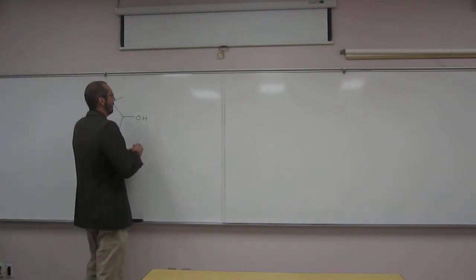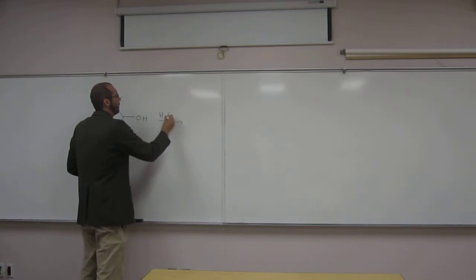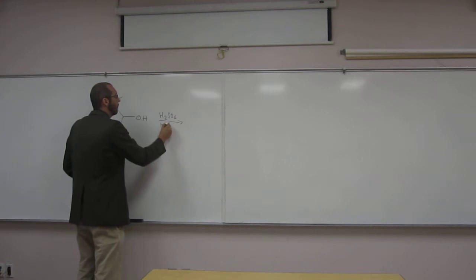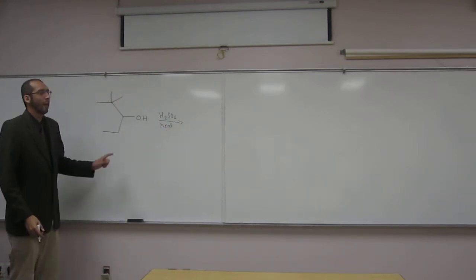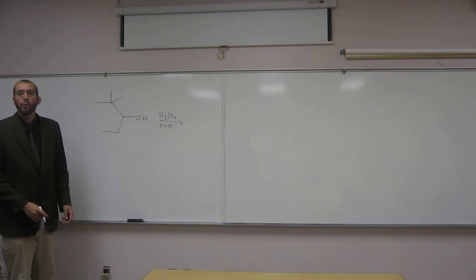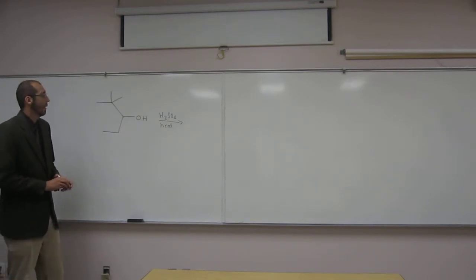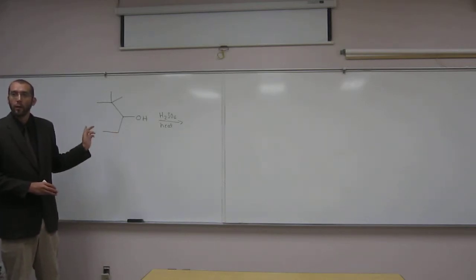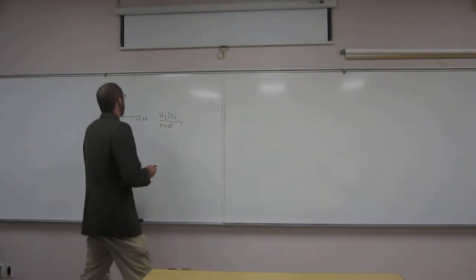E1 conditions, if you guys recall, for an alcohol we've shown H2SO4 and heat. So what kind of carbocation would I get from it? Can anybody tell me? Secondary. It would be the secondary and the positive charge would be right where the OH, where the hydroxyl group is.